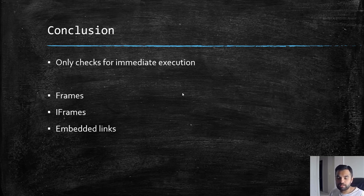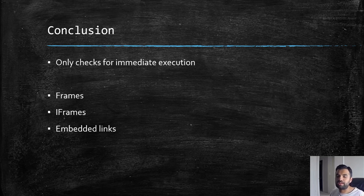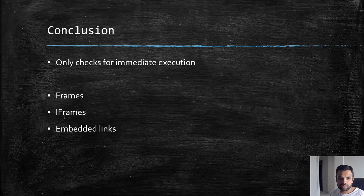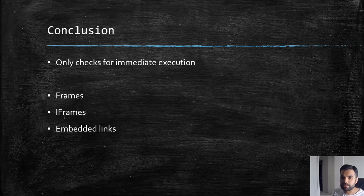This technique works not just on iframes but also on simple frames and embedded links like subdomains. Whenever there is a place where you can have a SRC-type attribute, you can utilize this technique to bypass the filter. The untrusted data injected in the initial request will be marked as trusted, and then we can use it in the subsequent request — that's how we bypass the IE anti-XSS filter.